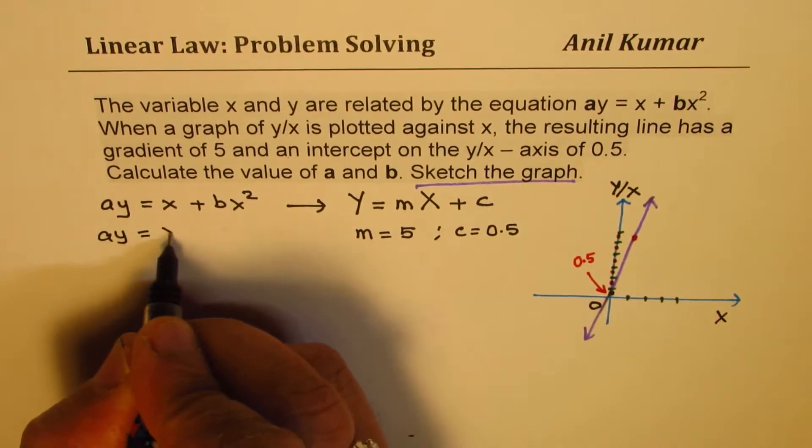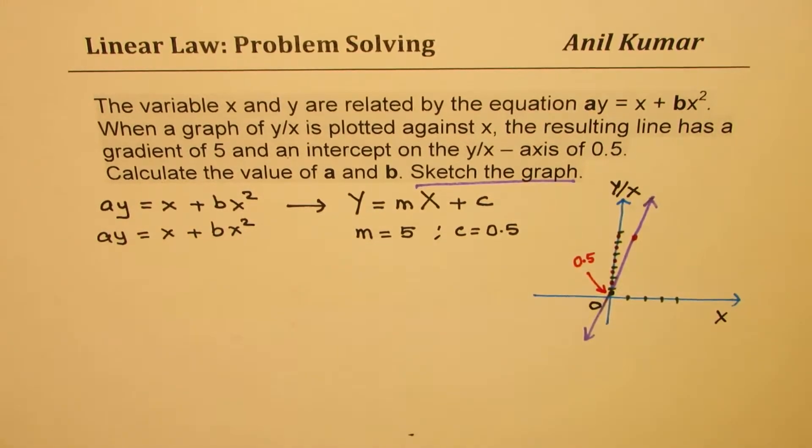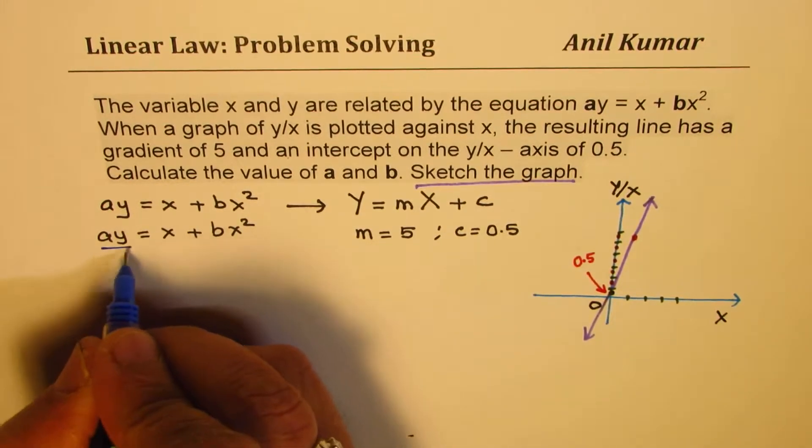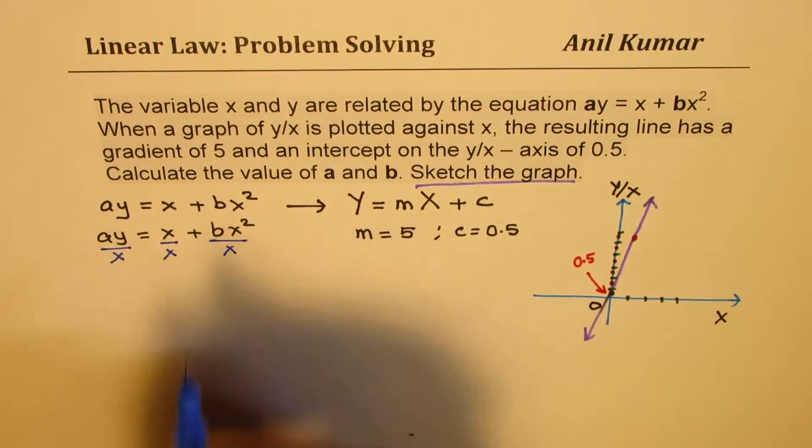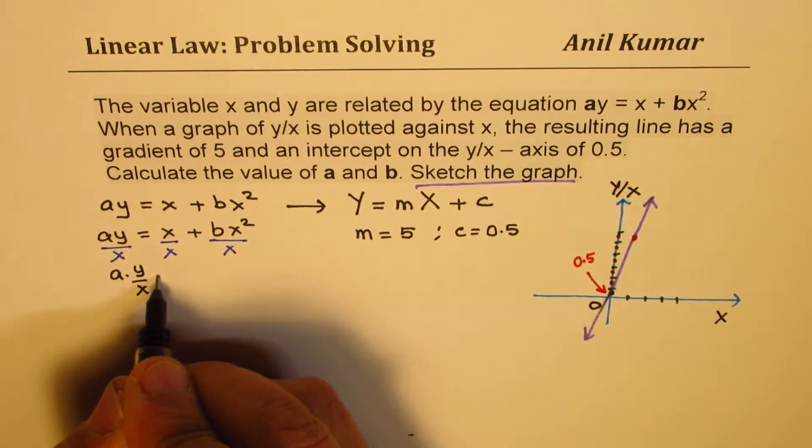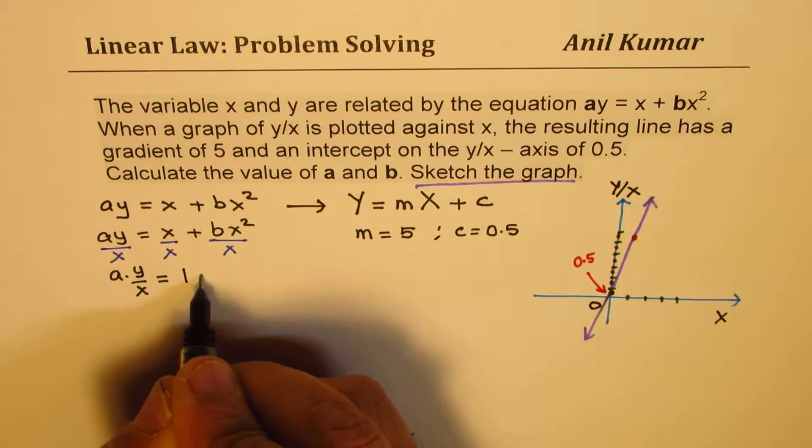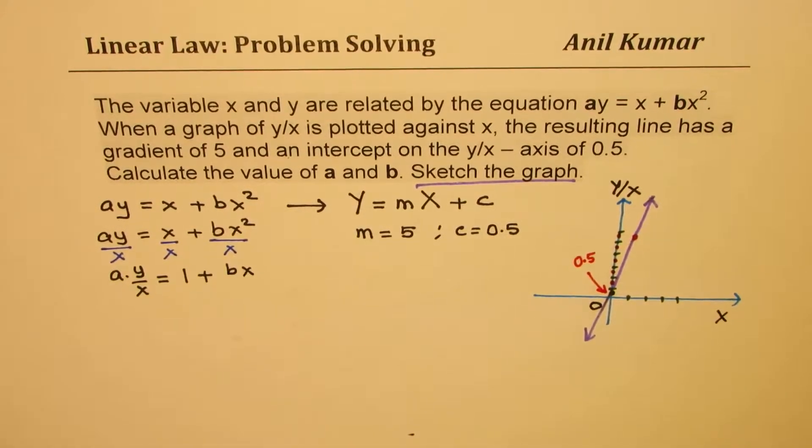We have ay equals to x plus bx². We are going to divide each and every term by x. Once you do that, you get a times y/x equal to 1 plus bx.